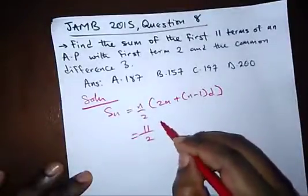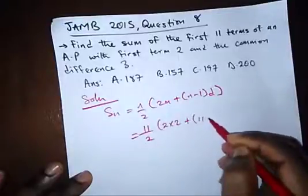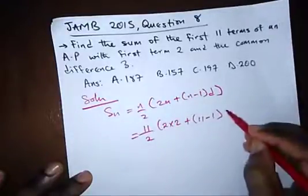And what's our first term? Our first term is 2 plus 11 minus 1. And what's our common difference? 3.